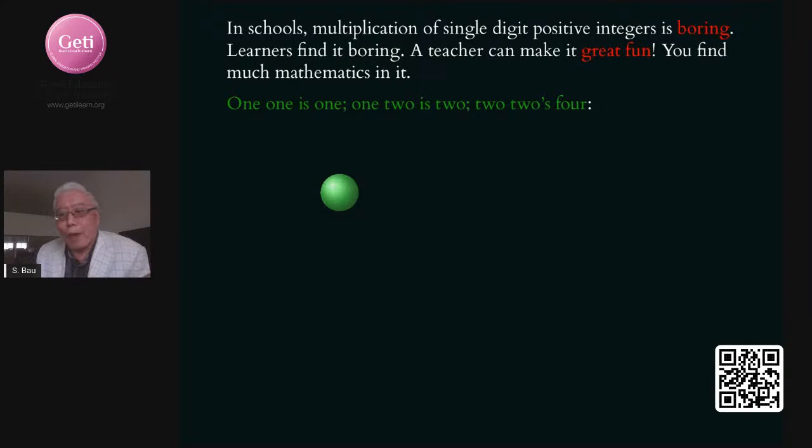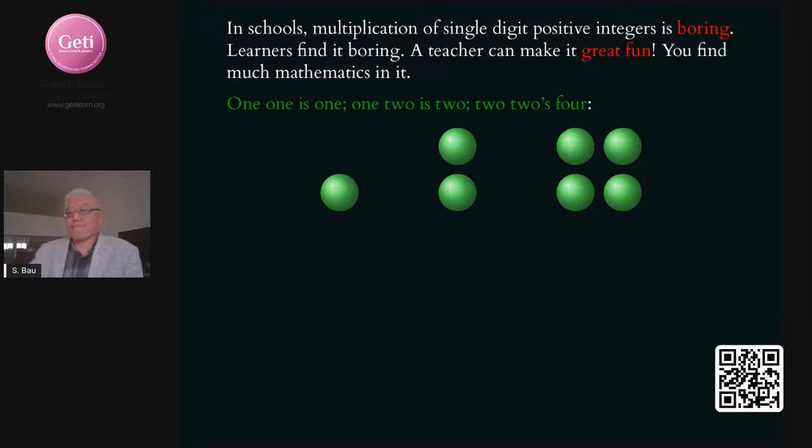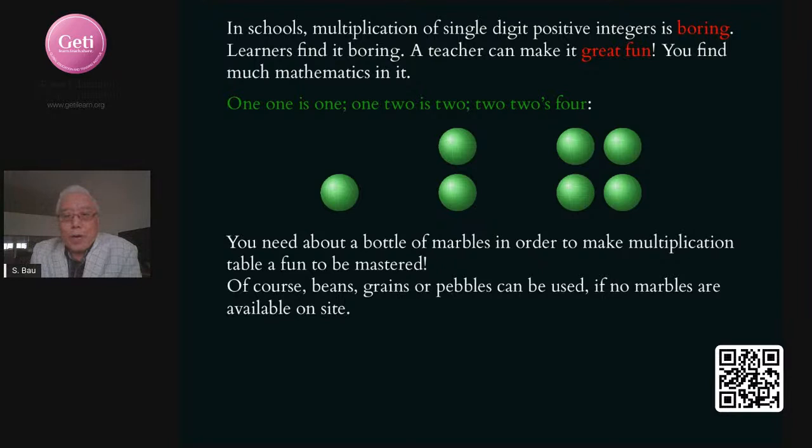This is one marble. One batch of one marble is 1. This is what it says. You can touch it. 1 times 2 is 2. 2 times 2 is 4. You see children can arrange this in this manner and then count it one by one. You can do this if you have a sufficiently large set of marbles.